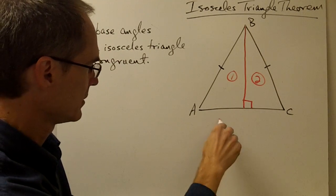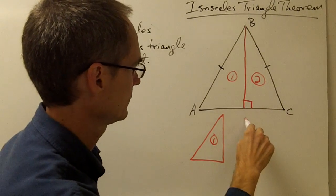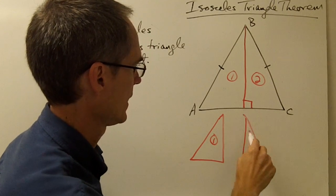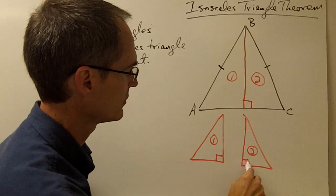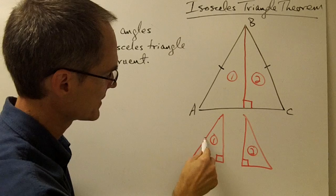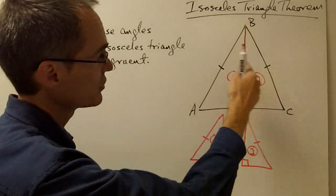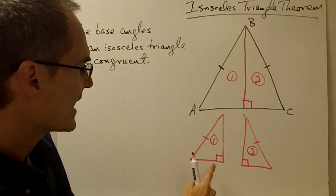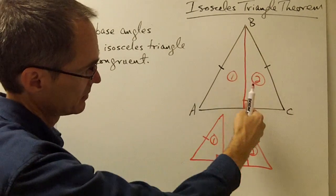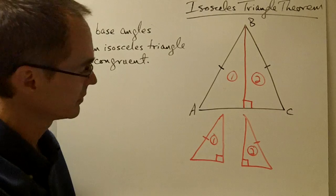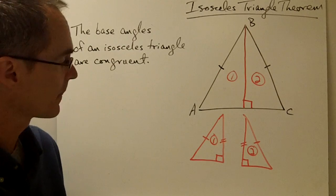Let me go ahead and draw these out over here a little bit smaller. Here's triangle number one, and here's triangle number two. These are both right triangles. I know that these two sides here — the hypotenuses of these small right triangles — are congruent. And I also know that these legs here are congruent because they're both the same line, congruent to itself.